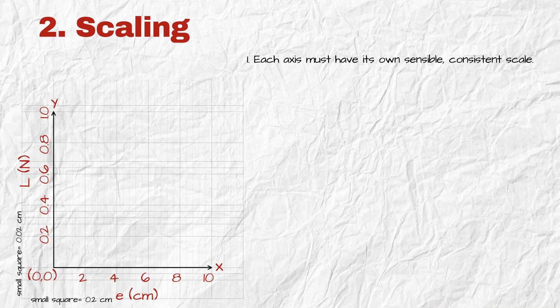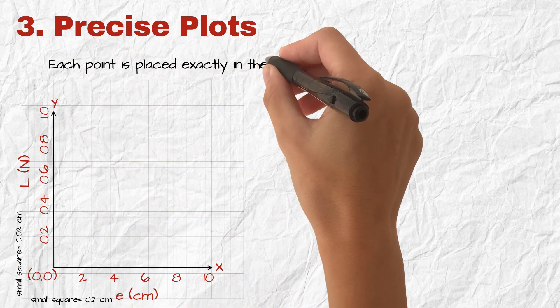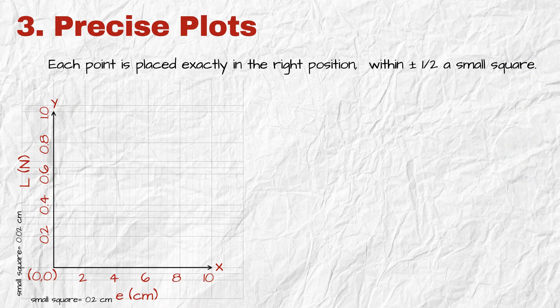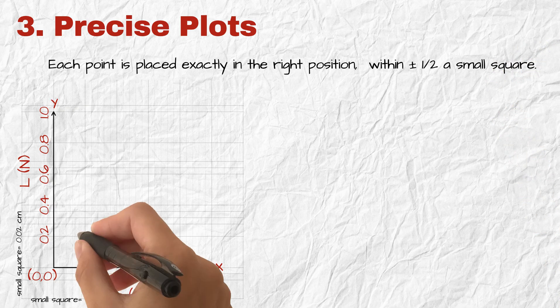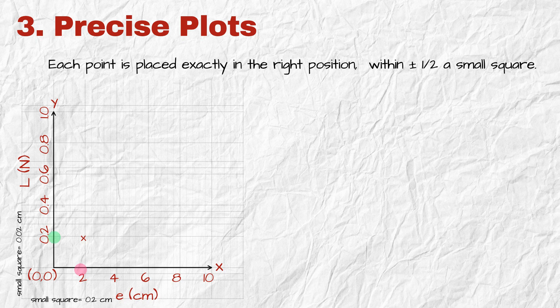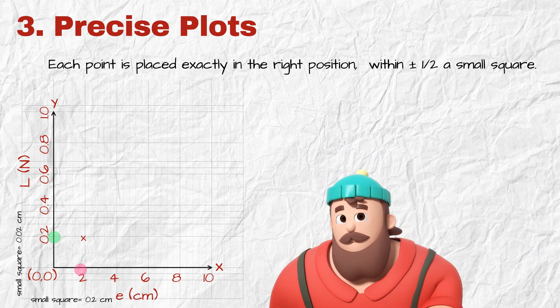Step three, precise plots. What does precise plots mean? Each point is placed exactly in the right position, within plus or minus half a small square. Let's now plot the first point. Extension equals two centimeters, load equals zero point two newtons. On the x-axis, two. On the y-axis, zero point two. Put a tiny cross exactly at that intersection. That's a precise plot.